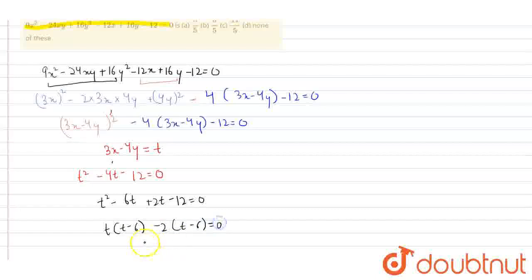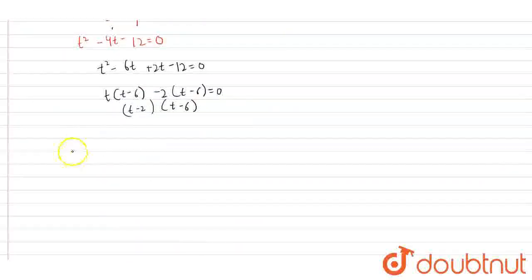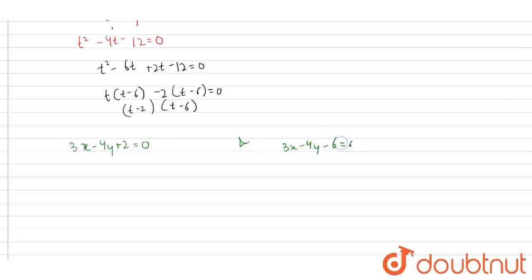So two factors will be t minus 6 and t plus 2. So two equations would be 3x minus 4y plus 2 is equal to 0, and 3x minus 4y minus 6 is equal to 0.